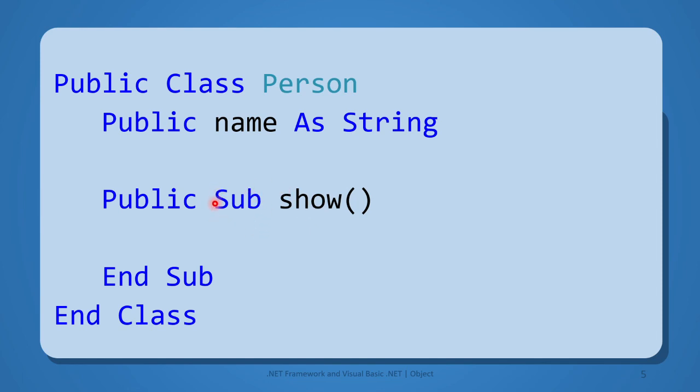Sub procedures are declared with the keyword sub and the sub procedure's definition ends with end sub. This sub procedure is going to display our field name, and hence we will have this line: console.writeline name.